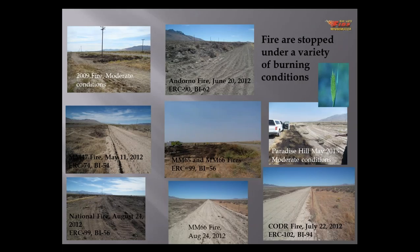Some documented successes with the highway disking fuel breaks: at moderate burning conditions, say the Mile Marker 147 fire with ERCs of 74 and BIs of 54, all the way to the Coder Fire with ERCs over 100 and a BI of 94 — the fuel break completely stopped the fire even without suppression resources getting there first. These are very, very successful fuel breaks that we've implemented.